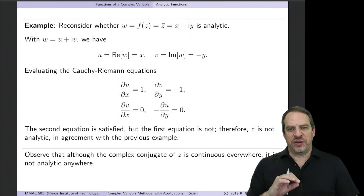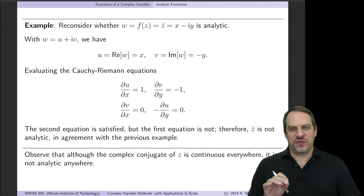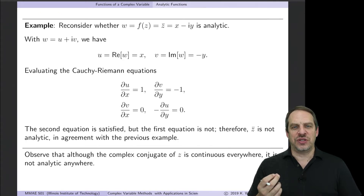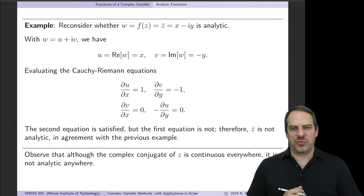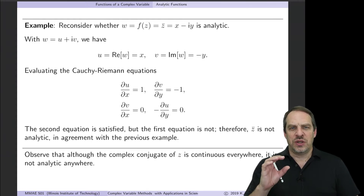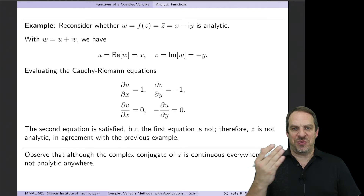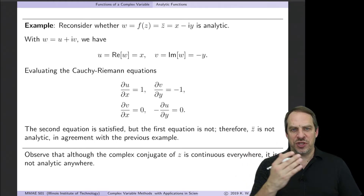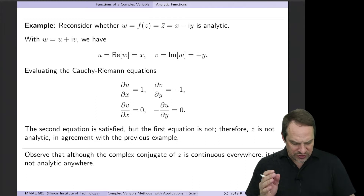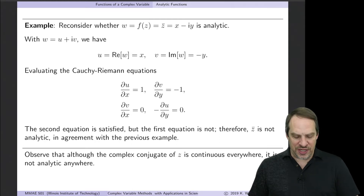In the previous video we looked at the calculus of complex functions. We derived the Cauchy-Riemann equations, which are a necessary and sufficient condition for analyticity of a complex function. I want to do a couple of examples here, and then talk about whether there's a geometric relationship between the u's and the v's. So the Cauchy-Riemann equations give us a mathematical relationship — is there also a geometric relationship? Let's look at the same examples we did in the last video.